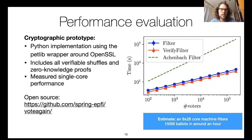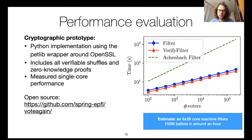We implemented all of these cryptographic schemes using a Python implementation with the petlib wrapper around OpenSSL, which implements all verifiable shuffles and zero-knowledge proofs. The single-core performance shows that filtering around 100,000 ballots takes seven minutes on a single core. In contrast, Achenbach's approach takes five months to do the same. On a nation-scale election with a more powerful machine, we estimated it would take about an hour to filter 150 million ballots. The code is available online.